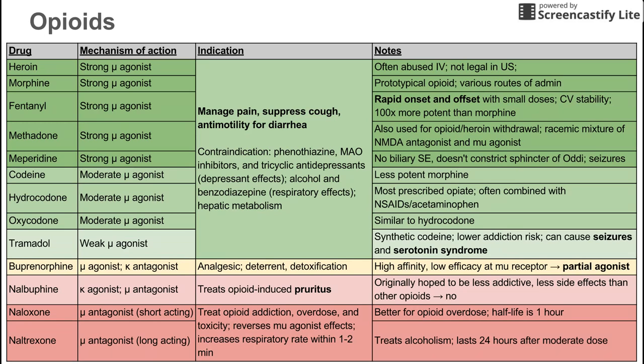Meperidine is specifically used in cases where people have pain related to the gallbladder. One of the main side effects of other opioids is that they constrict the sphincter of Oddi. Meperidine does not do this, so there are no biliary side effects. If somebody has gallbladder-related pain, oftentimes meperidine is the one to use. One bad side effect of meperidine is that it causes seizures.